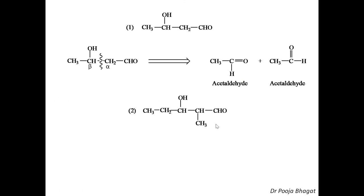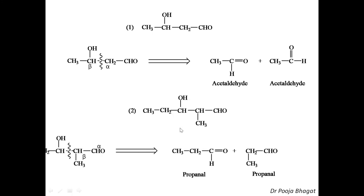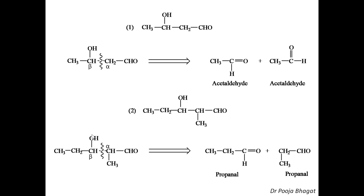Let us take another example. If this aldol is given and you have to synthesize it, select the alpha carbon and beta carbon. Then do the fission or cleavage. By the cleavage, this part is the carbonyl part and the hydrogen comes here. The carbonyl part is CH₃CH₂CHO and with hydrogen it gives CH₂CH₃CH₂CHO — again self-condensation, but here it is the self-condensation of propanol. Both molecules are propanol.